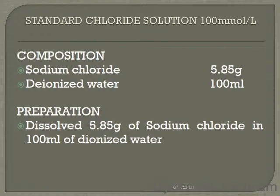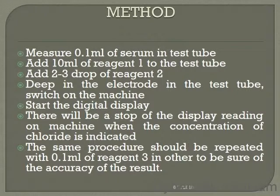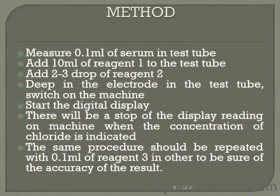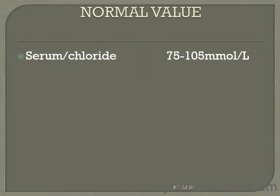The standard sodium chloride composition: add 5.85 grams of sodium chloride to 100 ml of deionized water. Dissolve 5.85 grams of sodium chloride in 100 ml of deionized water. Method: measure 0.1 ml of serum in a test tube, add 2 to 3 drops of reagent 2, dip the electrolyte in the test tube, switch on the machine, and start the digital display. The display reading will stop when the concentration of chloride is indicated. The same procedure should be repeated with 0.1 ml of reagent 3 to confirm accuracy of the result. The normal value of serum chloride is 75 to 105 mmol per litre.